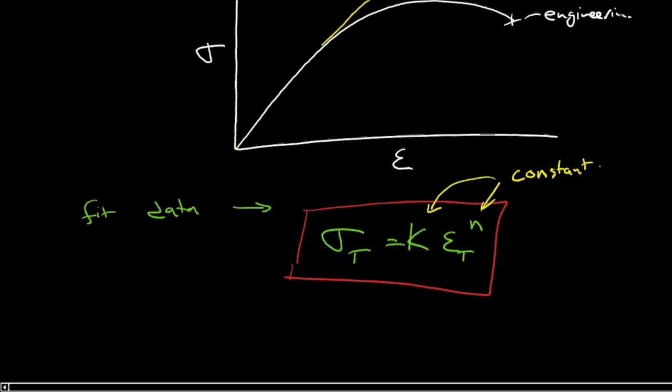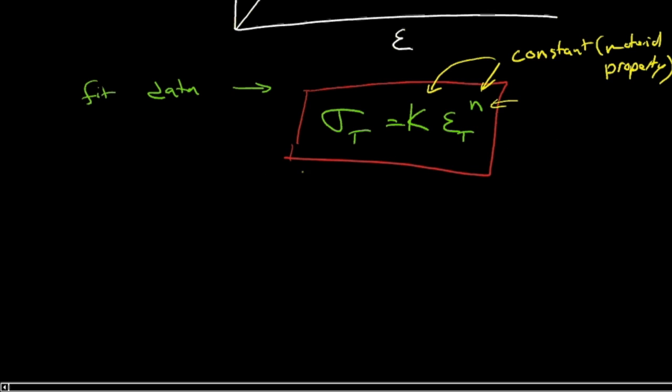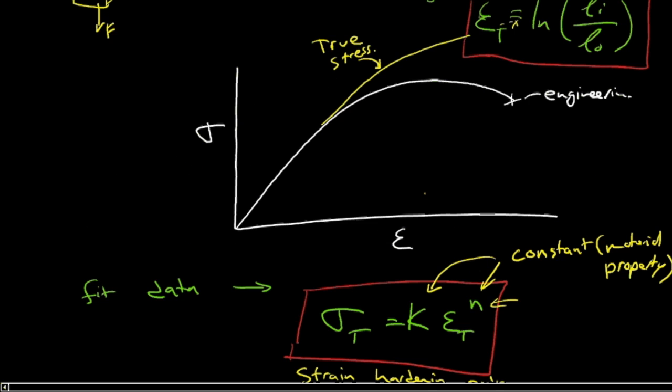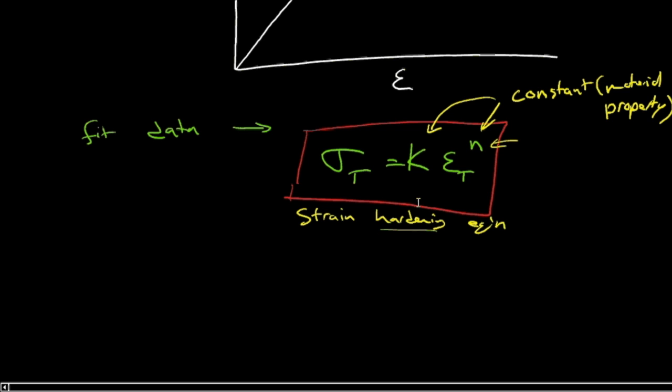Those are material properties. We can look those up in an engineering handbook. So n is called, well, this equation is actually called the strain hardening equation. And strain hardening, hardness correlates to strength. So really, this is an equation that's telling us that we're strengthening the material.